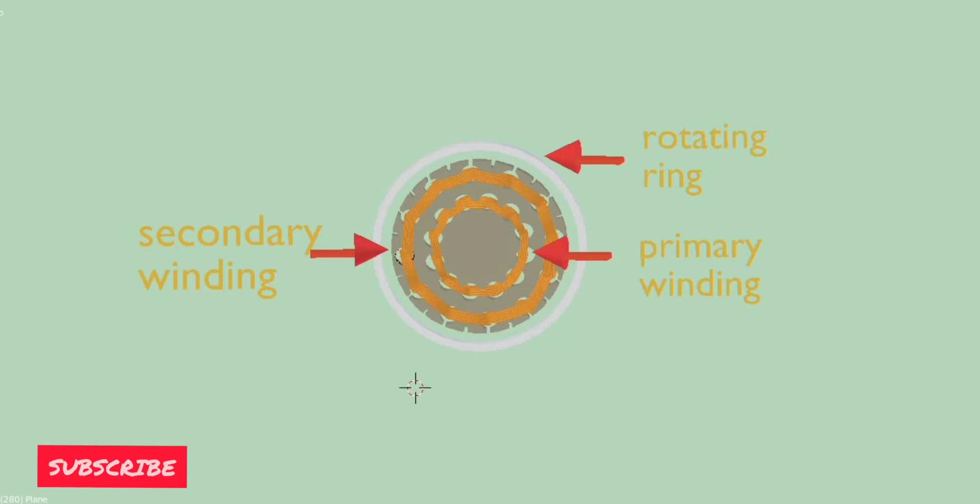Now we understand how the fan rotates. Now we will understand why there is a need for a capacitor. Actually, I am giving the supply to the primary winding at 90 degree phase difference with the help of the capacitor. The secondary winding is insufficient to produce a starting torque, so the starting torque is provided with the help of the primary winding.